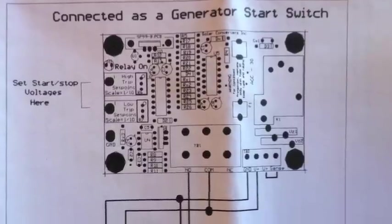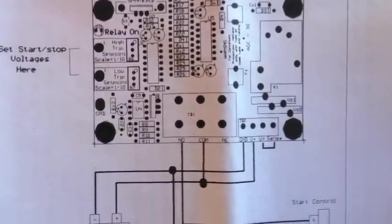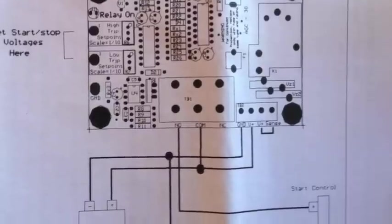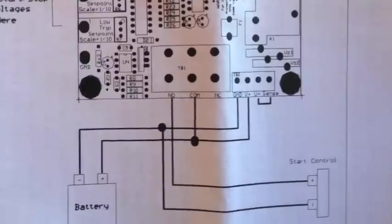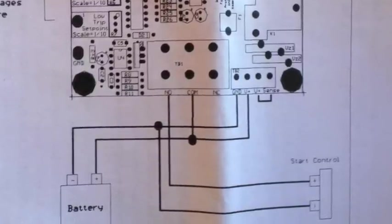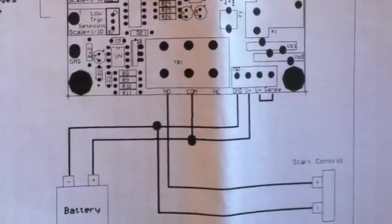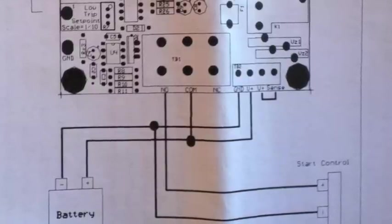So here we have a generator relay switch. This is what I'll be using in my system. You see how it's connected to NO, which is normally open. And then it's connected to the starting control of the generator. So when the battery voltage gets too low, it auto-kicks the generator on and powers the batteries and the load that drain the batteries.